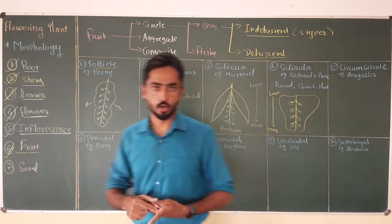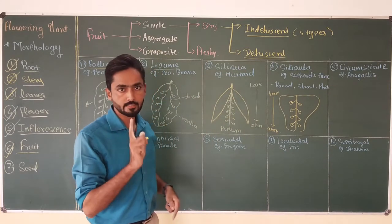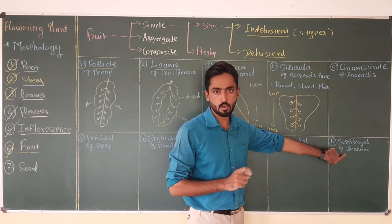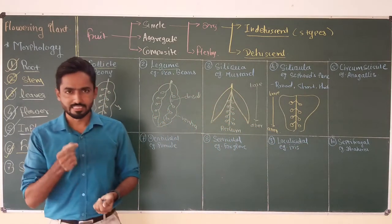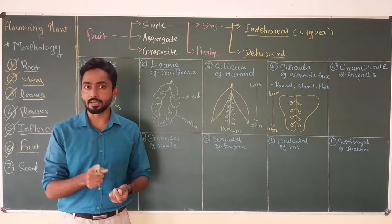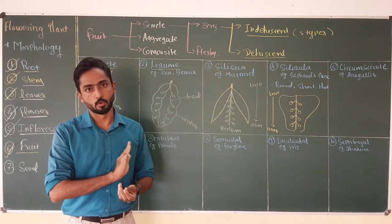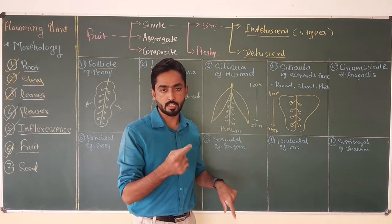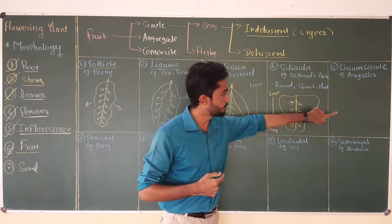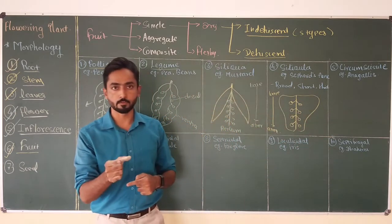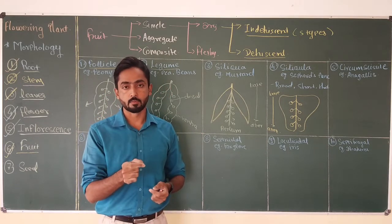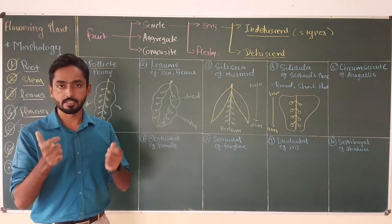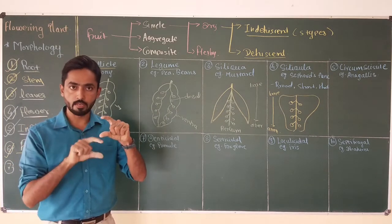The remaining six types of dehiscent fruit are subtypes of capsule. Capsule type of fruit is produced from a polycarpellary syncarpous superior or inferior ovary. So fruits one and two are from monocarpellary ovary, fruits three and four from bicarpellary ovary, and fruits five through ten are all subtypes of capsule, produced from polycarpellary syncarpous superior or inferior ovary where multiple carpels are fused.